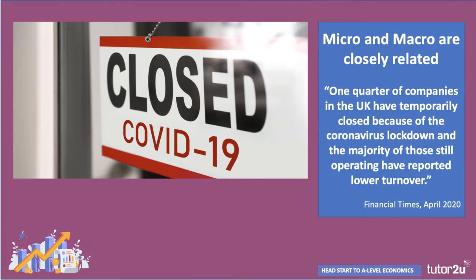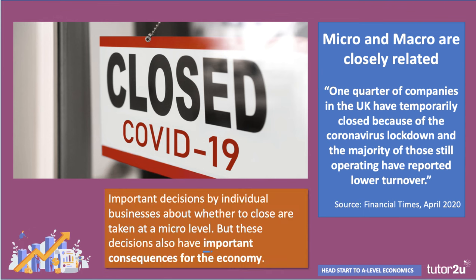We finish this introductory video by reflecting that very often micro and macroeconomics are linked — they are interrelated. Consider this headline from the Financial Times: one quarter of companies in the UK have temporarily closed because of the coronavirus lockdown, and the majority of those still operating have reported lower turnover. Those decisions about whether individual businesses carry on when the lockdown is relaxed are essentially taken at a micro level, at the level of the firm or the industry. But those decisions can also have, in aggregate, very important consequences for the economy as a whole.